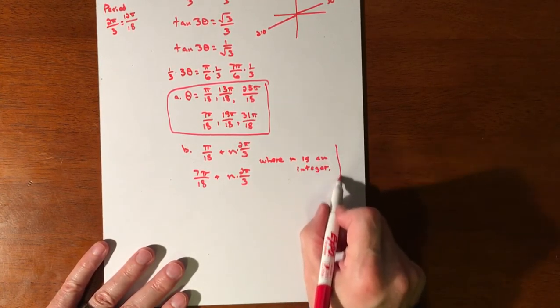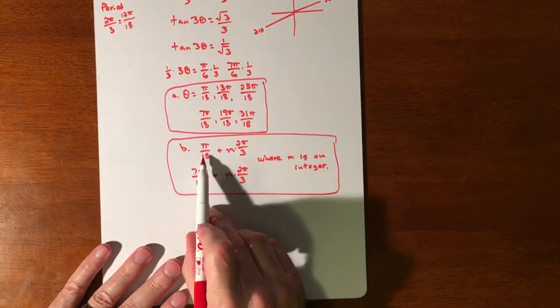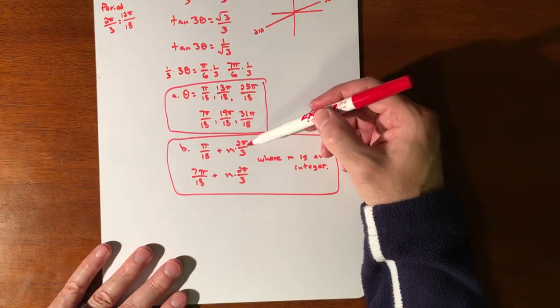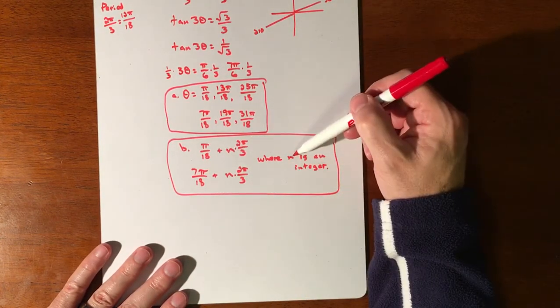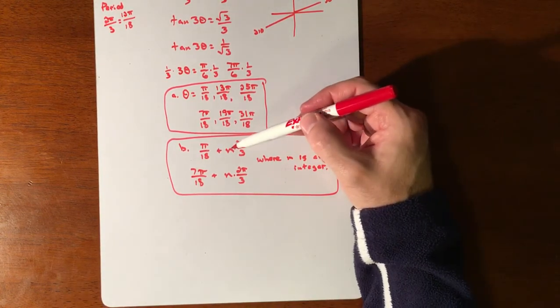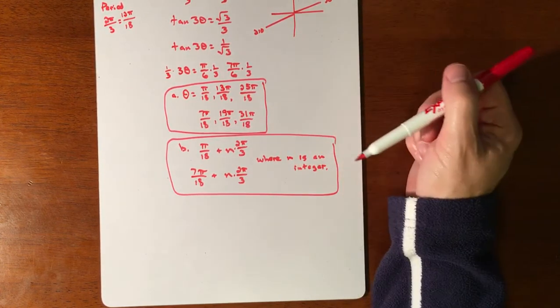where n is an integer. Where n is an integer. There you go. Okay. So that takes care of all of our coterminal angles because we just have, again, representing n as an integer so no fractions. It could be positive whole numbers, negative whole numbers. Again, that just tells us there's the direction that we're going to go with our coterminals.